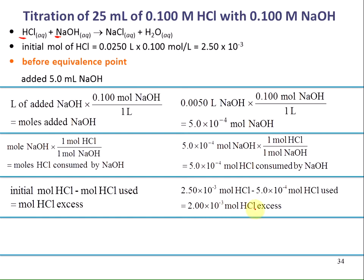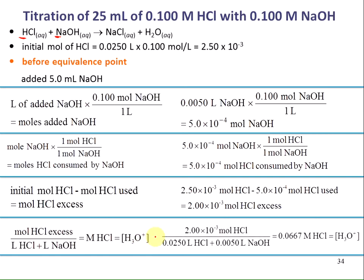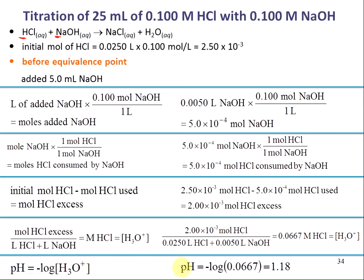To find the pH, I need the hydronium concentration. I take the moles of HCl in excess and divide by the total volume: 2 × 10⁻³ moles ÷ (0.025 + 0.005) L = 0.0667 molar HCl, which equals the hydronium ion concentration since HCl completely dissociates. Taking the negative log of that concentration gives a pH of 1.18 when 5 mL of sodium hydroxide has been added.